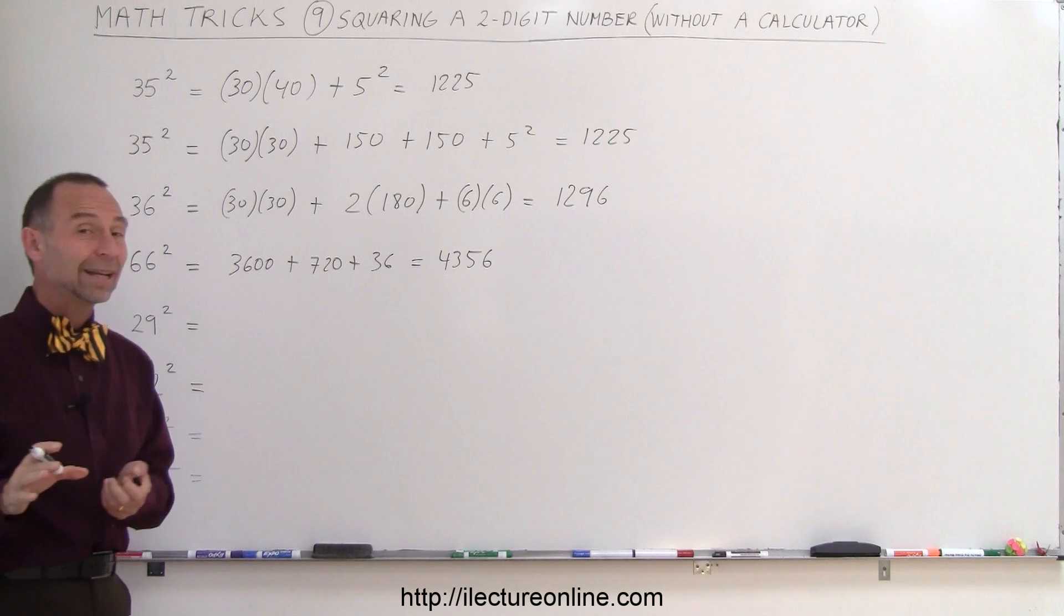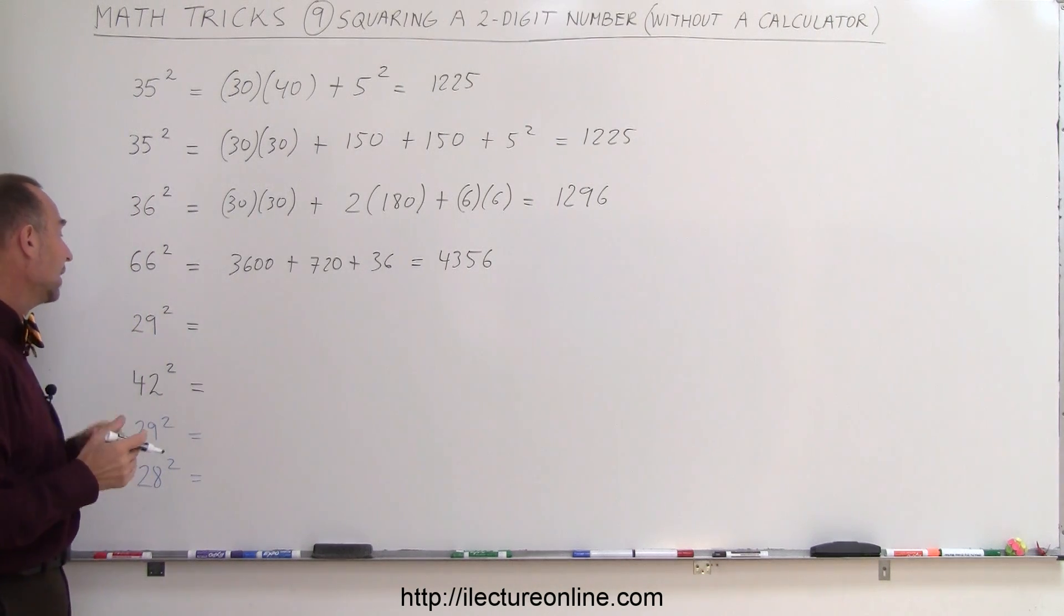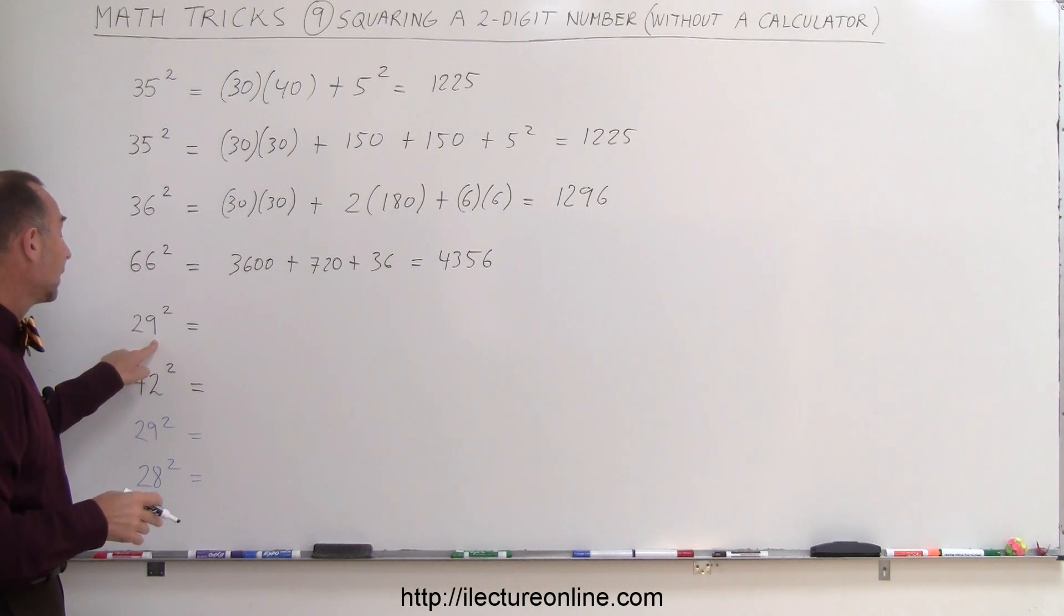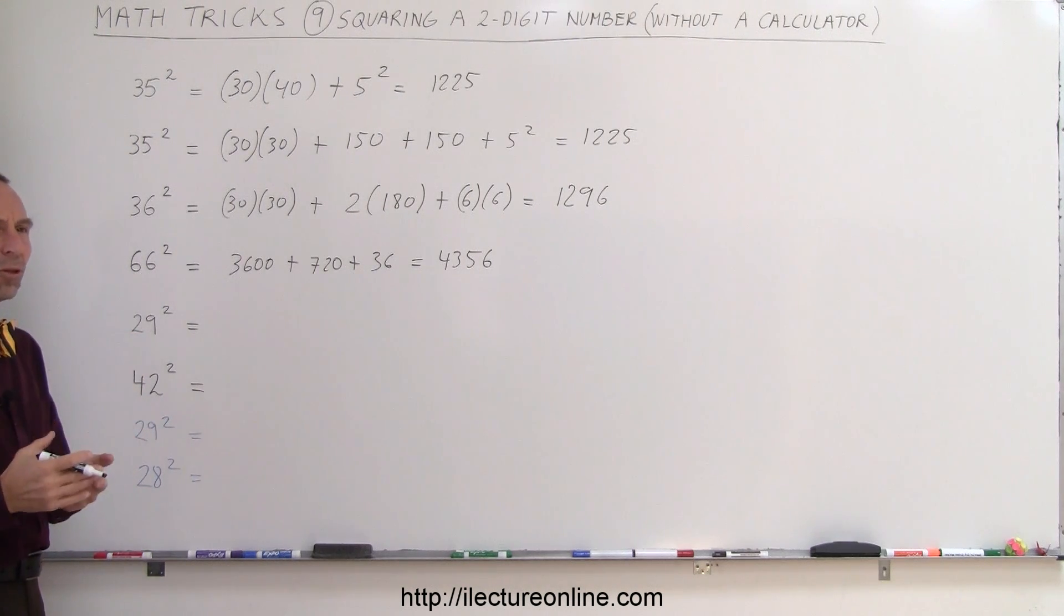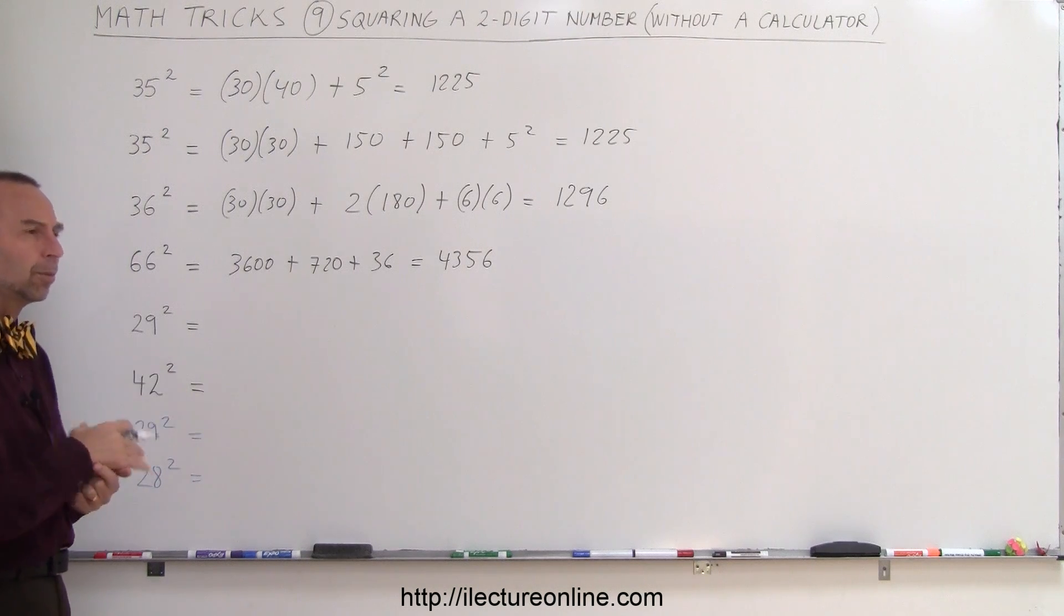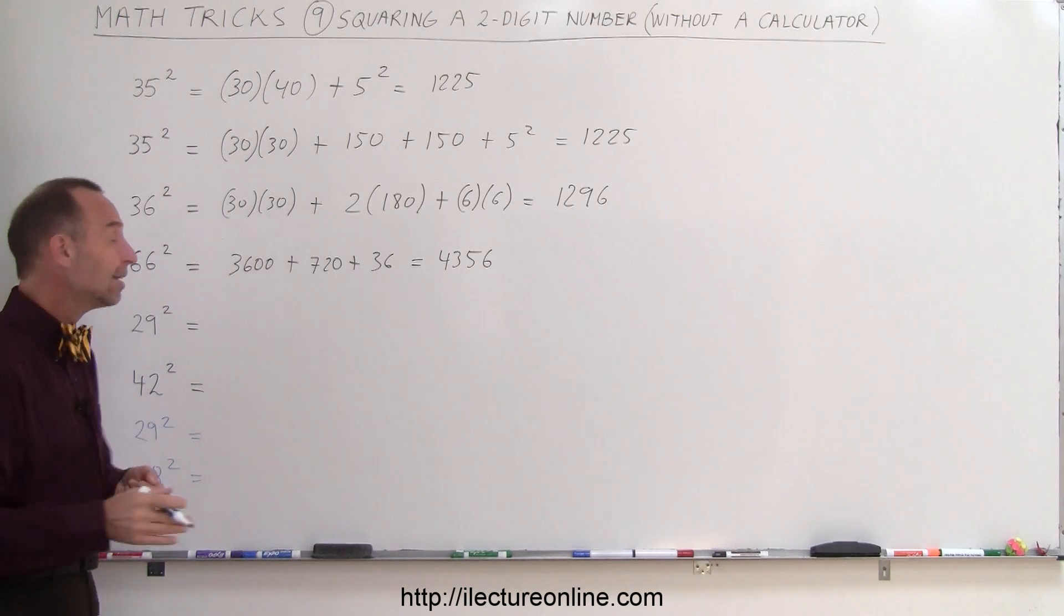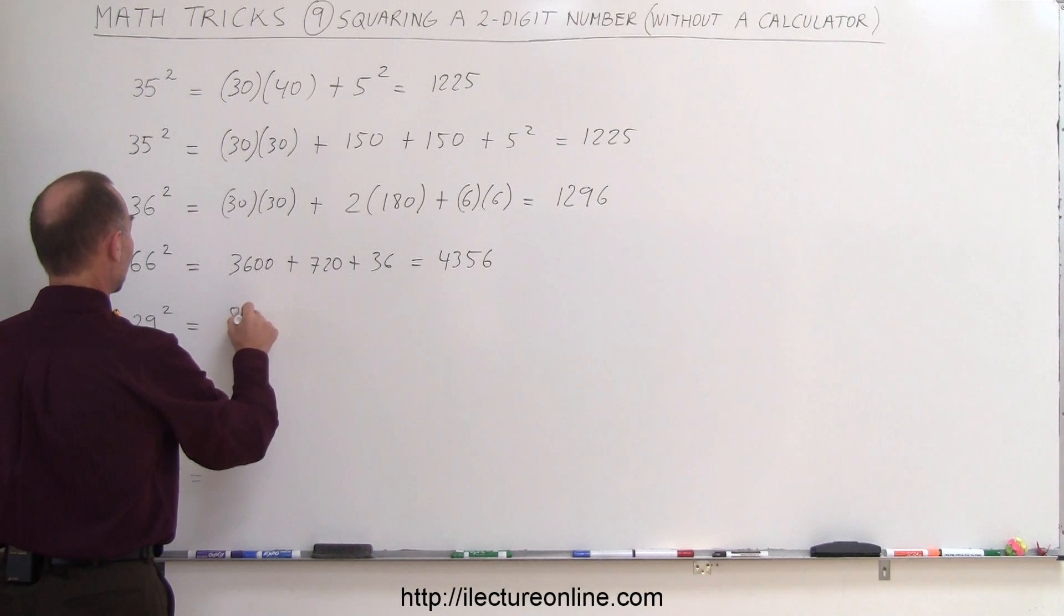All right, let's try it now with writing even less down. 29 squared, so we go 20 times 20 is 400, 20 times 9, that would be 180, times 2, that would be 360, so 400 plus 360 is 760, plus 9 squared, which is 81, so 760 plus 81 would be 841, and so the answer is 841.